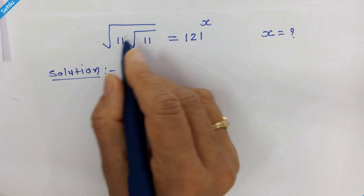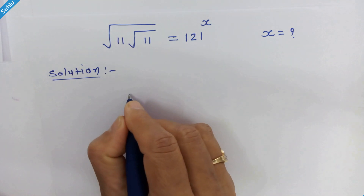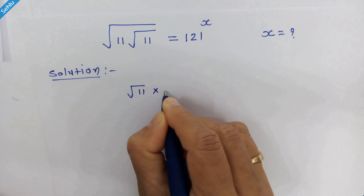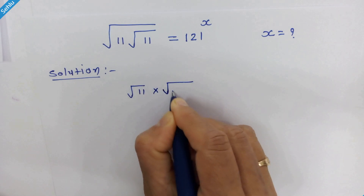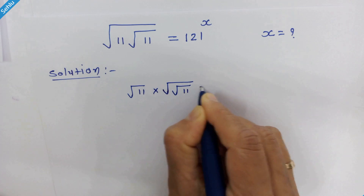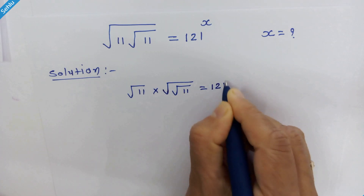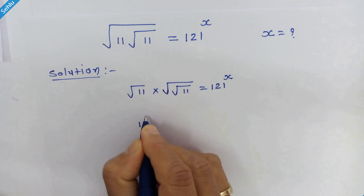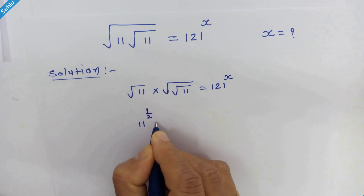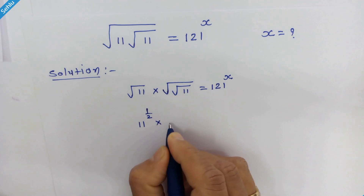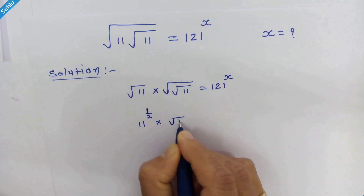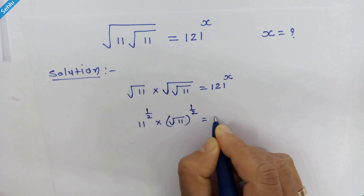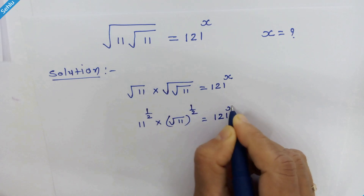First, we will focus on the left hand side. We can write it like square root of 11 times square root of square root of 11, which is equal to 121 raised to x. Square root of 11 can be written as 11 raised to 1 upon 2, and here we can write square root of 11 raised to 1 upon 2, equal to 121 raised to x.